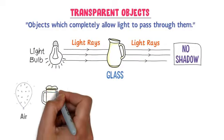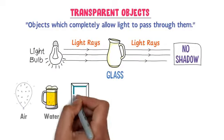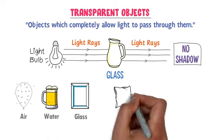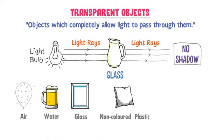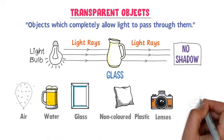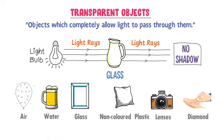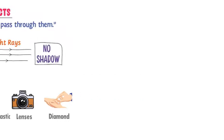For example: air, water, clear glass, non-colored plastics, lenses, diamond, window glass, etc. These all objects are transparent objects because they allow light to pass through them and they do not create any shadow.